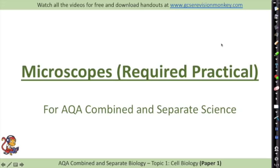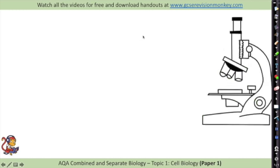For paper 1 in biology, one of the required practicals is preparing a specimen under a microscope. Microscopes are used to see really small objects. This here is a light microscope, which uses light, and it can be used to see things such as cells and some small subcellular parts within that cell.